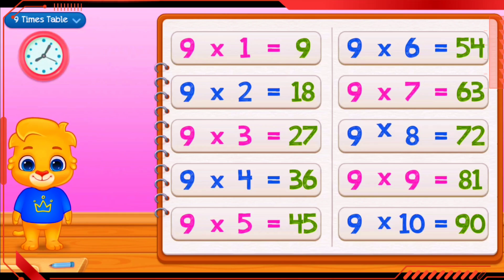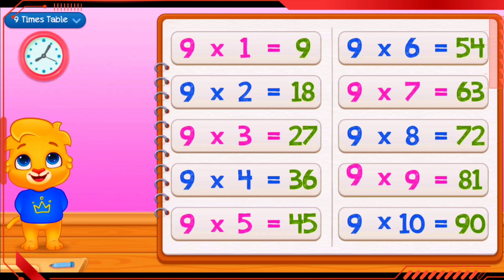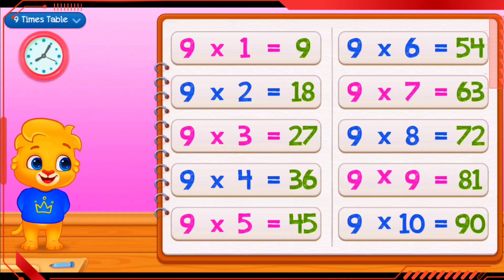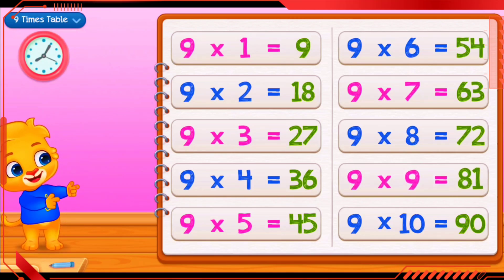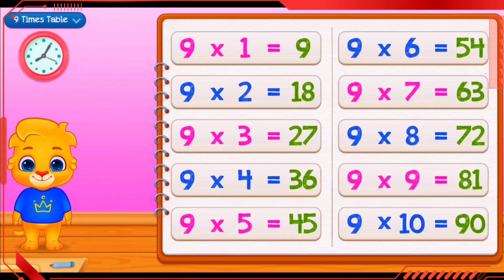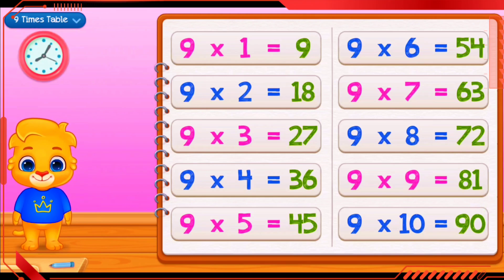9 times 8 equals 72. 9 times 9 equals 81. 9 times 10 equals 90.